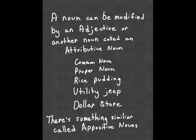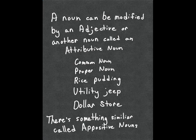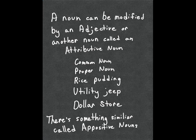Nouns can be modified by an adjective, but nouns can also modify other nouns in a system called an attributive noun. For example: common noun, proper noun, rice pudding, utility jeep, dollar store. You might think — isn't that noun just acting as an adjective? If you're an English teacher, you'll be keen on knowing the terms properly. But if you're just trying to become a better writer or learning the language, don't worry too much about it. There's also something called an appositive noun, where a noun provides more information for another noun. Nouns are just people, places, and things — every sentence is going to have one, if not a pronoun.